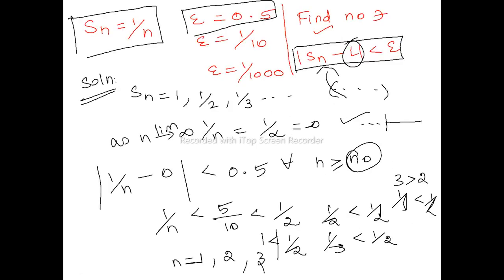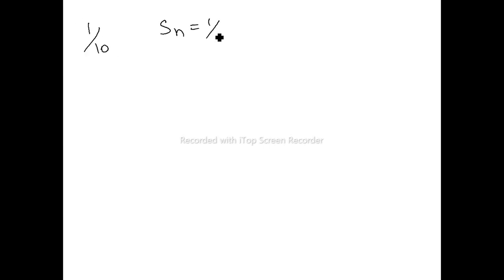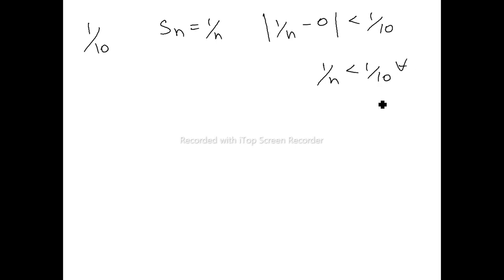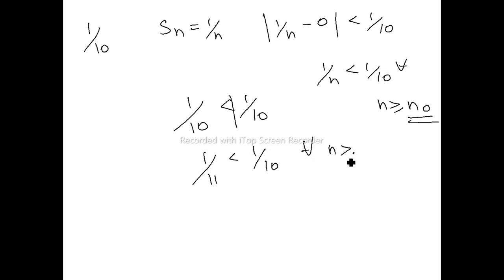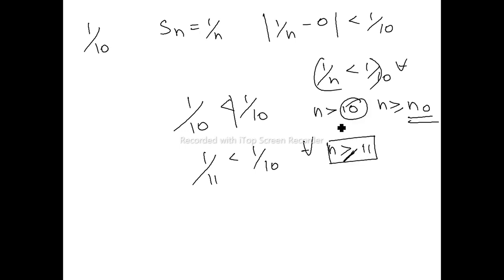For the same question, epsilon = 1/10. We need |1/n minus 0| < 1/10, so 1/n < 1/10. Checking n=10: 1/10 < 1/10 is false. Checking n=11: 1/11 < 1/10 — correct. So for every n ≥ 11 the sequence satisfies this condition for epsilon = 1/10. Equivalently, n must be strictly greater than 10, giving n0 = 11.